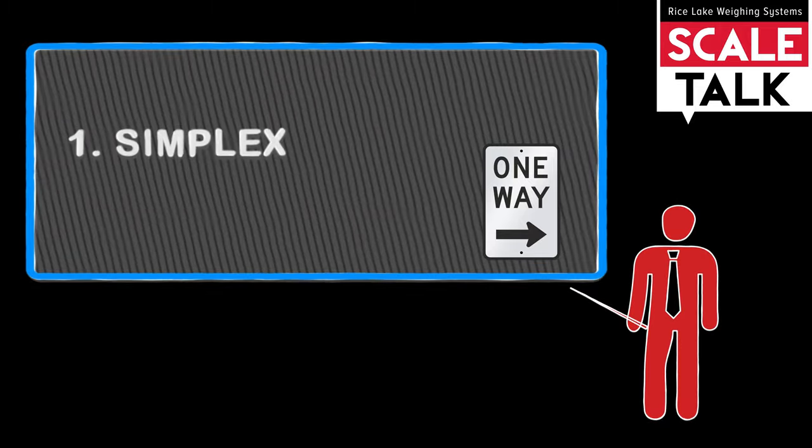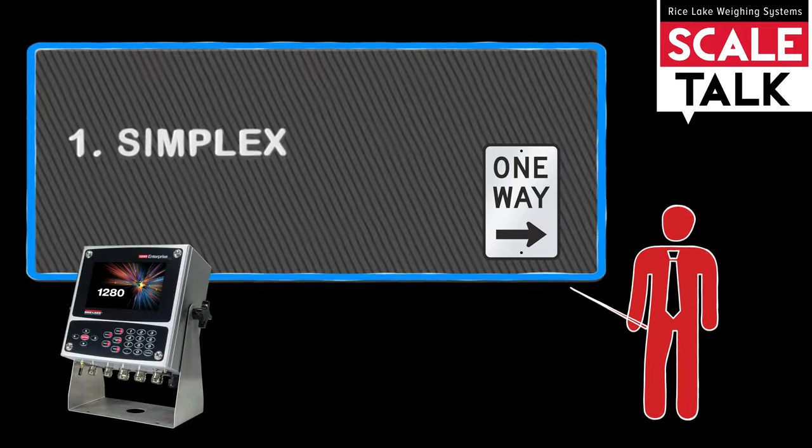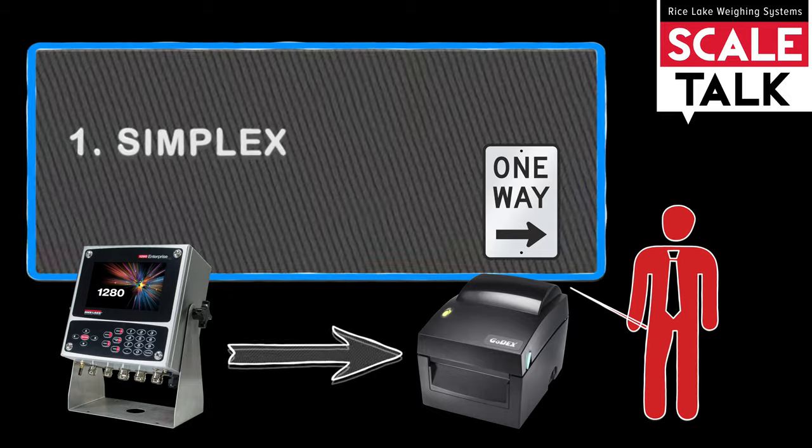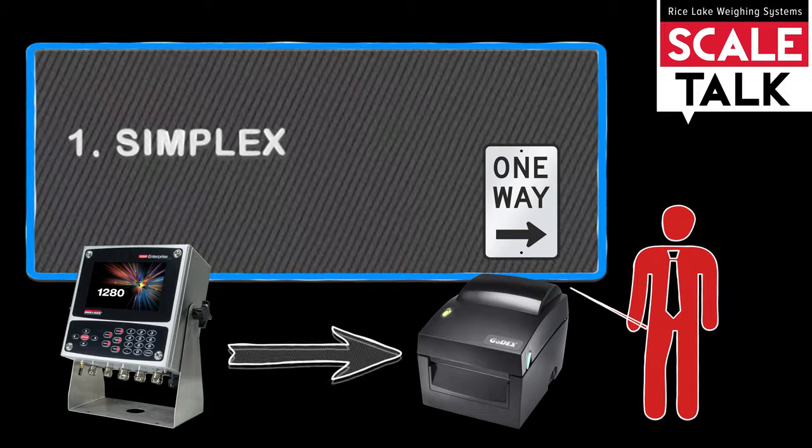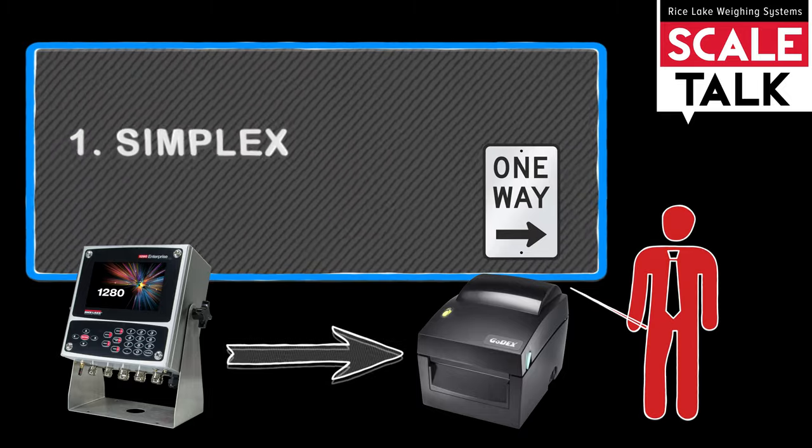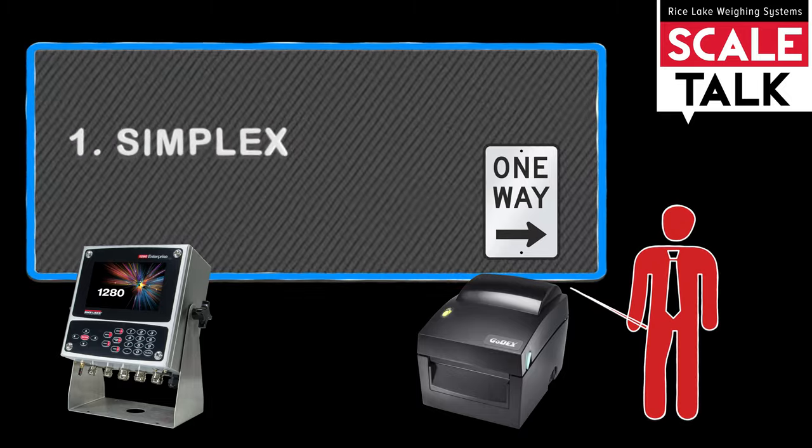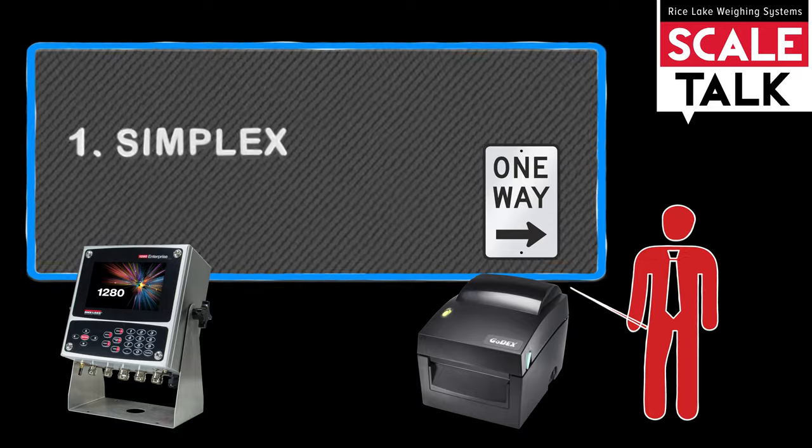An example of simplex communication is the relationship between a weight indicator and printer. The indicator sends data, and a printer does the work of printing the information. It does not communicate back to the indicator. It only receives information and performs its requested task.